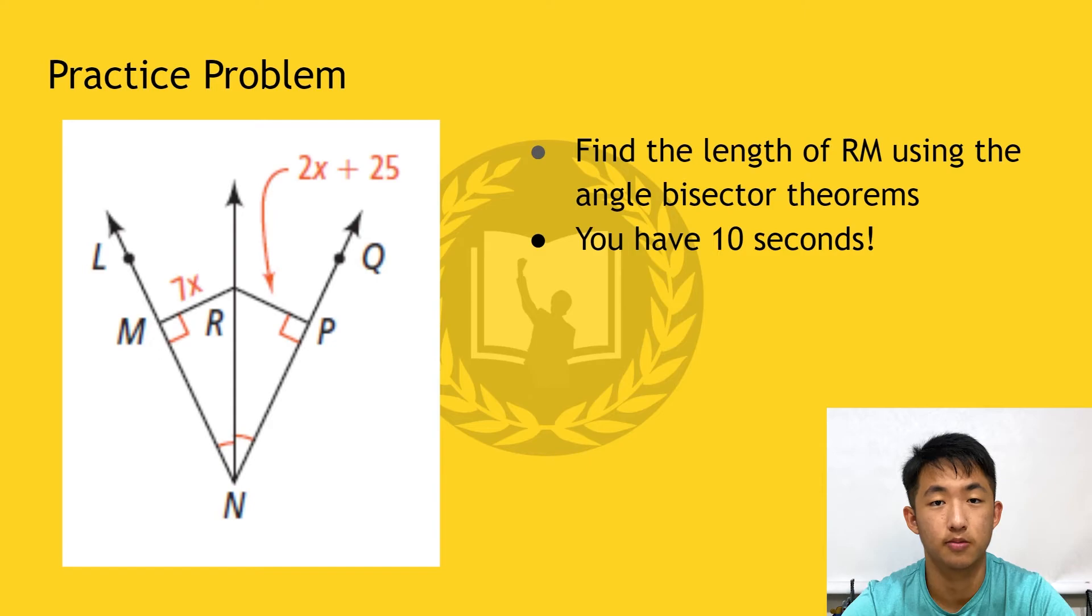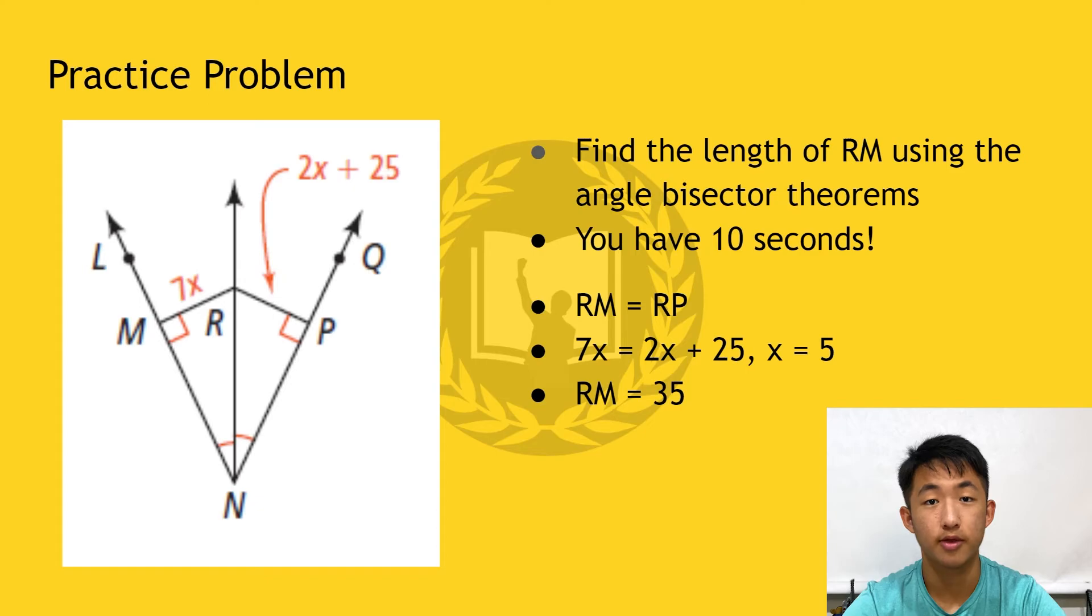All right, let's take a look at this problem. Since RM bisects angle N, we know that RM is equal to RP. Therefore, 7x is equal to 2x plus 25. We can then conclude that x is equal to 5, and that RM is equal to 7 times 5, 35.